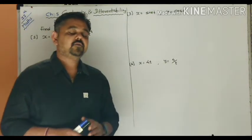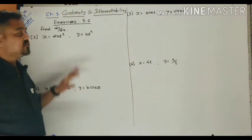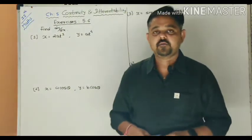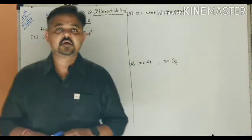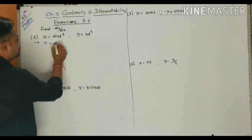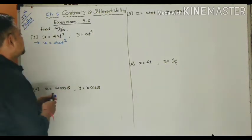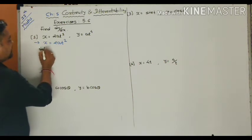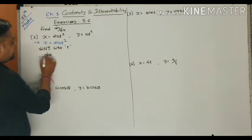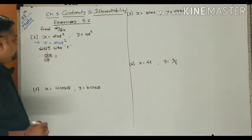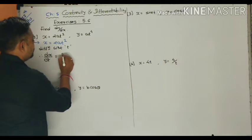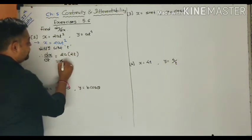How do we find the value of dy/dx? The first function: x is equal to 2at². Differentiation with respect to t gives dx/dt. Here 2a is constant, and the derivative of t² is 2t, so we get dx/dt = 2a · 2t = 4at.